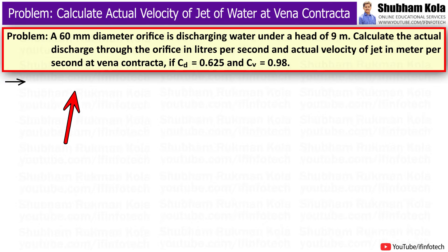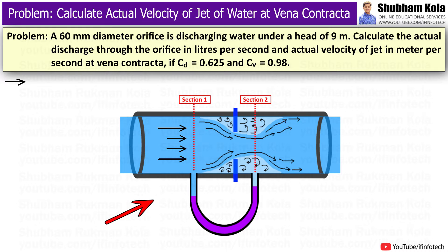In this video, we are going to solve a numerical problem based on an orifice meter, where we will calculate the actual velocity of jet of a fluid at vena contracta and actual discharge of a fluid through the orifice.